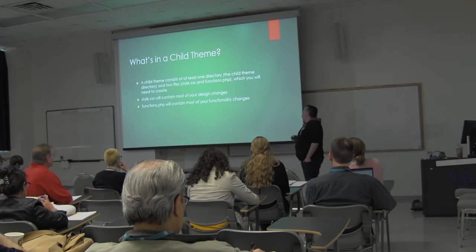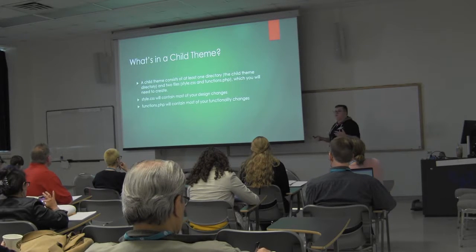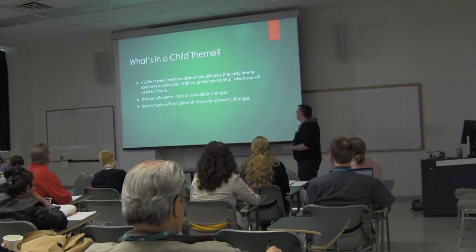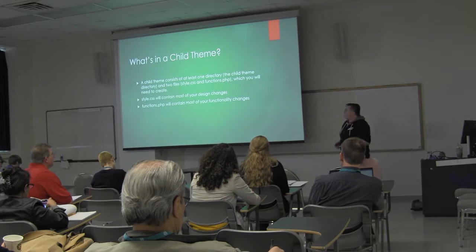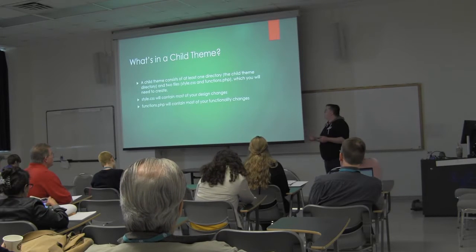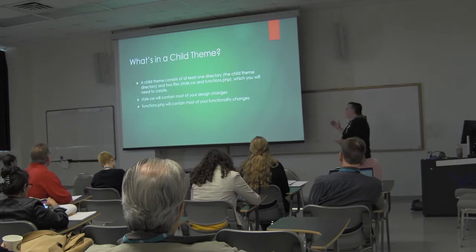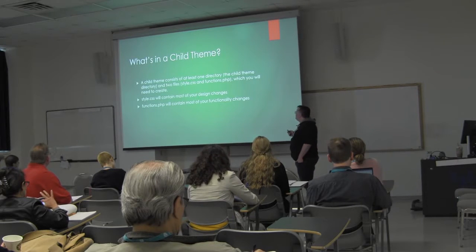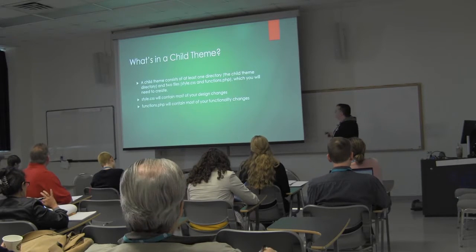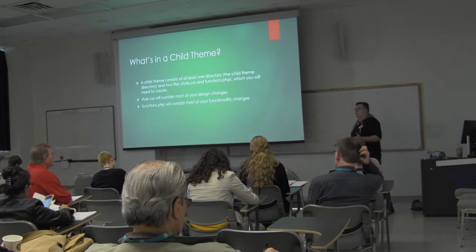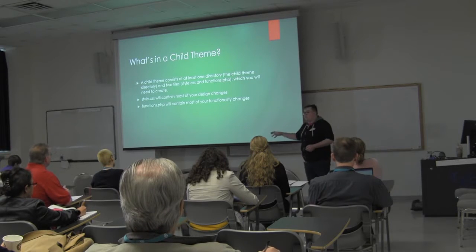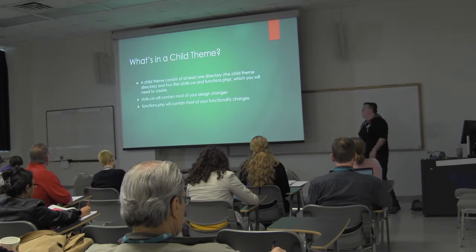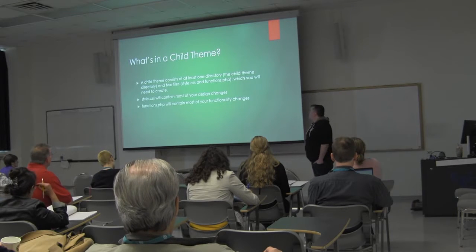A child theme is really simple compared to a regular theme. If you've ever looked inside something like the 2017 theme, there are a lot of files in there. But thankfully with a child theme, it can be as simple as you need it to be. The only files you actually need are a style.css file and a functions.php file. If you want to change the font or background color, you make those changes in style.css. If you want to do functionality changes, you do those in the functions.php file.